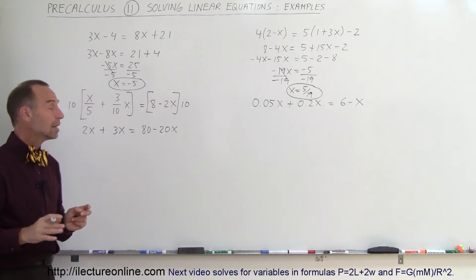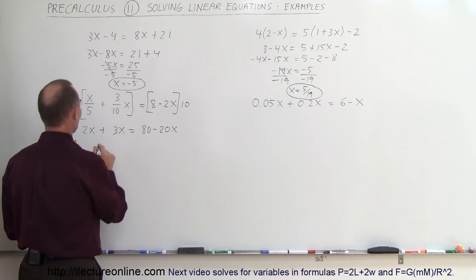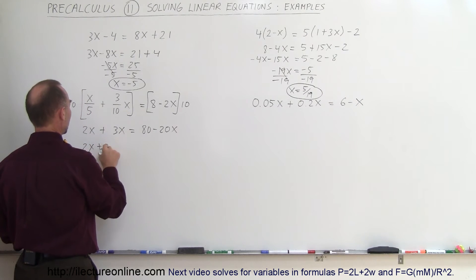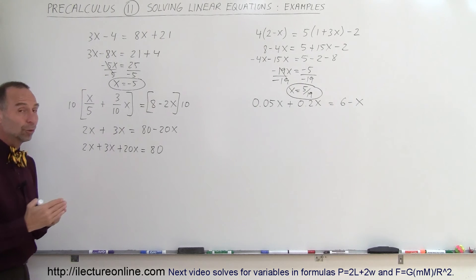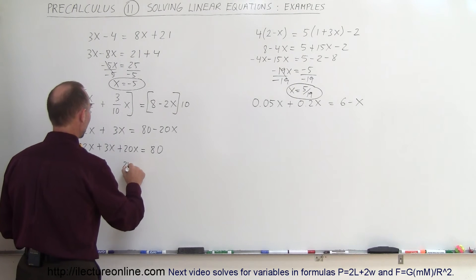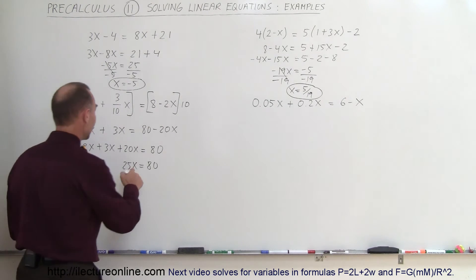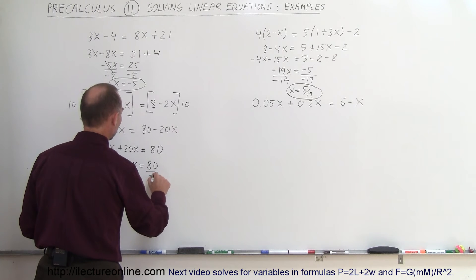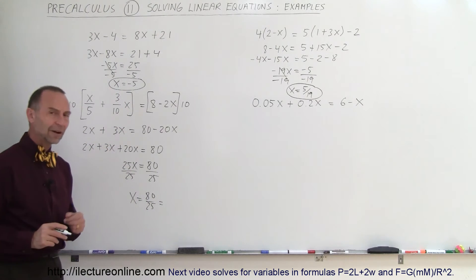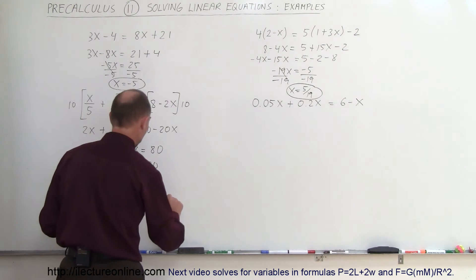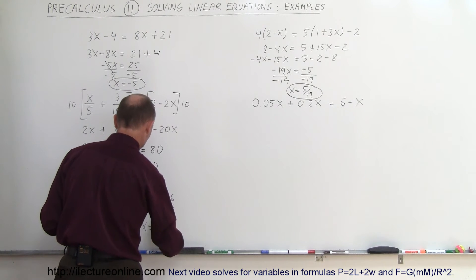Next step is to move all terms with an x to the left side, everything else to the right. The 80 is already there so that stays. We end up with 2x plus 3x plus 20x is equal to 80. We combine like terms: 25x is equal to 80. Now we divide both sides by the numerical coefficient of the variable — divide by 25 — so x is equal to 80 divided by 25. We can simplify that since both are divisible by 5, so that becomes 16 over 5. So x equals 16 over 5 is the final result.